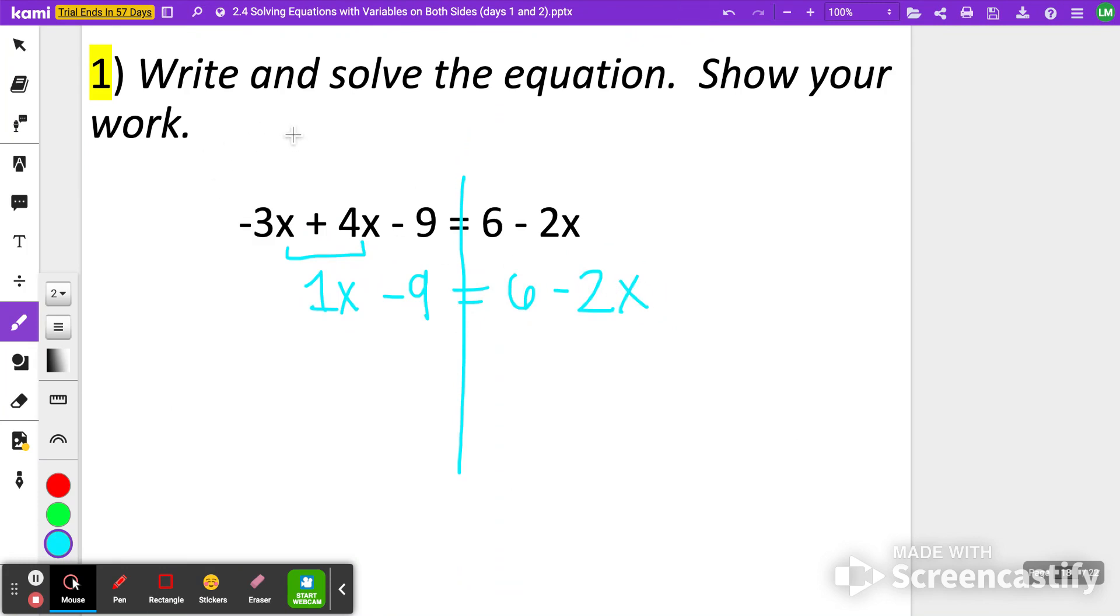Then I can decide what side I want the variables to be on. I'm going to decide to put the variables on this side, but again, it doesn't matter what side you put the variable on just as long as you do it correctly. In order to do that, I'm going to subtract 1x from both sides. Actually, no, I lied. I'm going to put variables on the left-hand side because I told you yesterday to try to default for variables to be on the left. My bad. So sorry about that. Variables on the left, that means I'm going to add 2x to both sides. And then 1x plus 2x is 3x minus 9 is equal to 6.